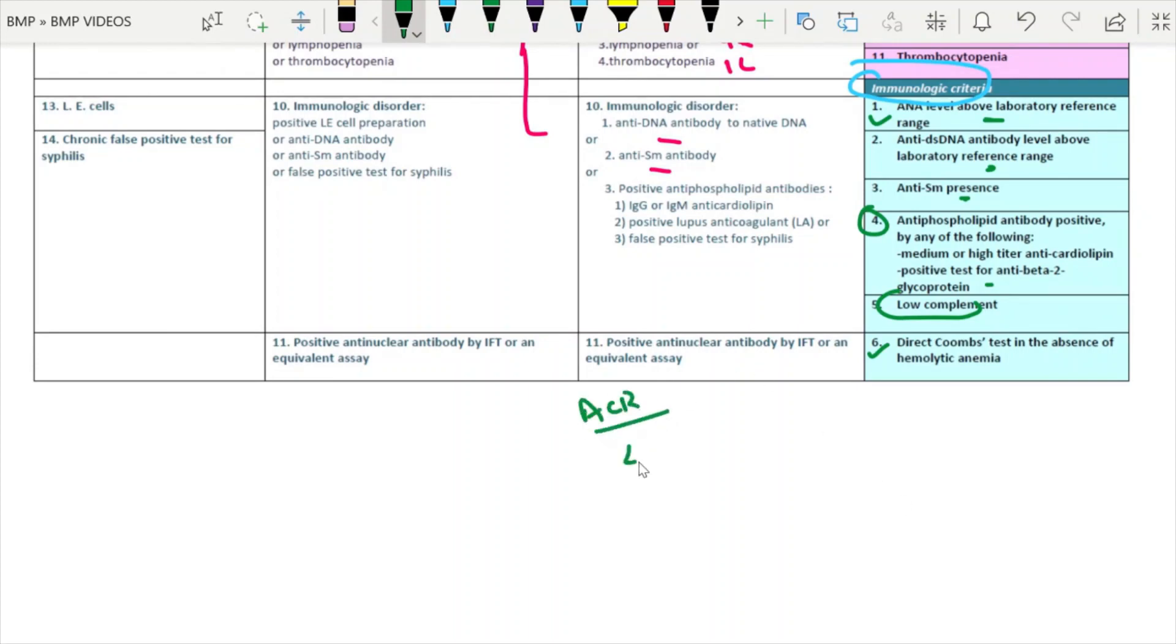Lupus, 4 out of 10 in total. In SLICC, 4 out of 10 in total, but one should be from each domain. One should be at least, one should be from clinical domain, one from the immunological domain. At least one in the two category. Here they didn't do any subdivision. Here the subdivision was done. Or presence of lupus nephritis plus ANA positive, this is also one of the diagnostic criteria for SLE under SLICC. In SLICC the sensitivity is higher, around more than 90 to 92 percent, but specificity is somewhat lower in the range of 75 to 80 percent. Specificity is somewhat lower, sensitivity is higher in SLICC.